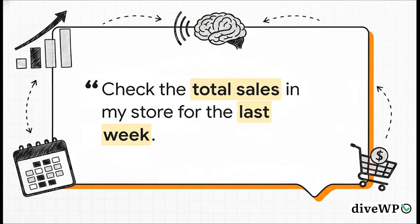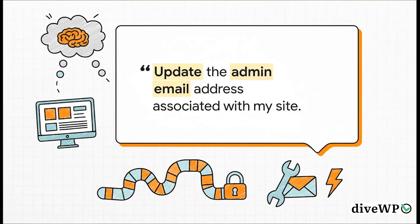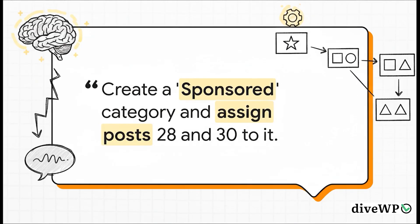Or what about getting data? Instead of having to find the report section, figure out the date ranges, and then run the report, you just ask the question — boom, you get instant access to your store's performance. Even basic site administration becomes totally effortless. No more hunting around in the general settings page trying to remember where that field is. A quick command handles a core task like this instantly and securely. And for anyone creating content, this is a total game changer. Think about reorganizing your posts — a task like this could take several minutes of clicking back and forth between the posts list and the category page. Now it's automated with a single precise instruction.